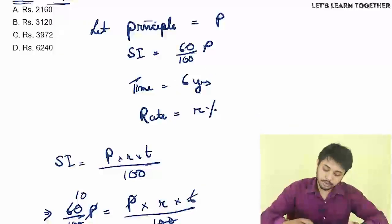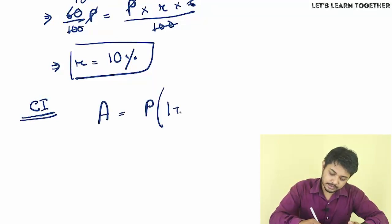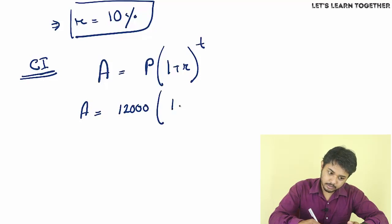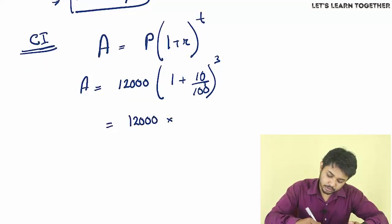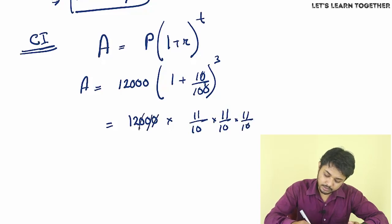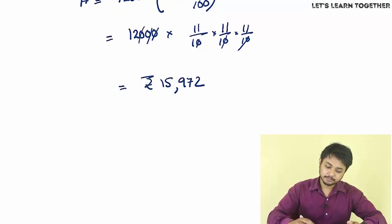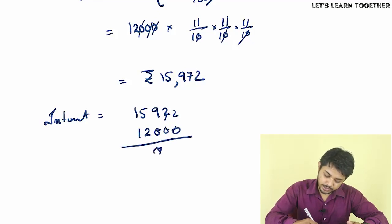Using SI formula: SI equals P R T by 100. So 60 by 100 P equals P times R times 6 by 100, giving rate R equal to 10%. Now for compound interest: principal is 12,000, rate is 10%, time is 3 years. CI amount equals 12,000 into 11 by 10 cubed, which equals 15,972.